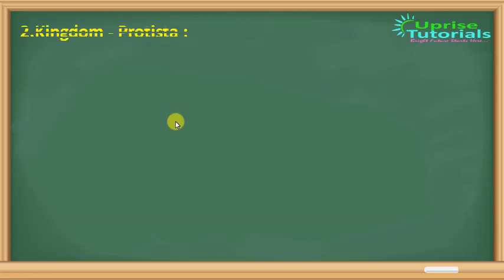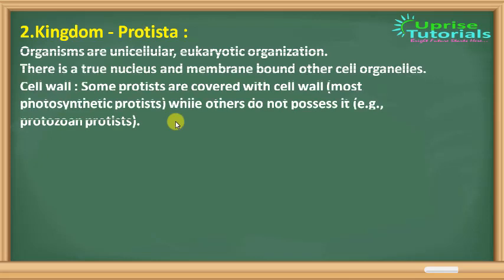The next kingdom is Protista. Protists are more developed than Monera. Organisms are unicellular but eukaryotic. There is a true nucleus and membrane-bound cell organelles. Monera was very simple — it had no true nucleus, only a nucleoid. But in Protista, there is a true nucleus with a nuclear membrane, and the cell organelles are membrane-bound.